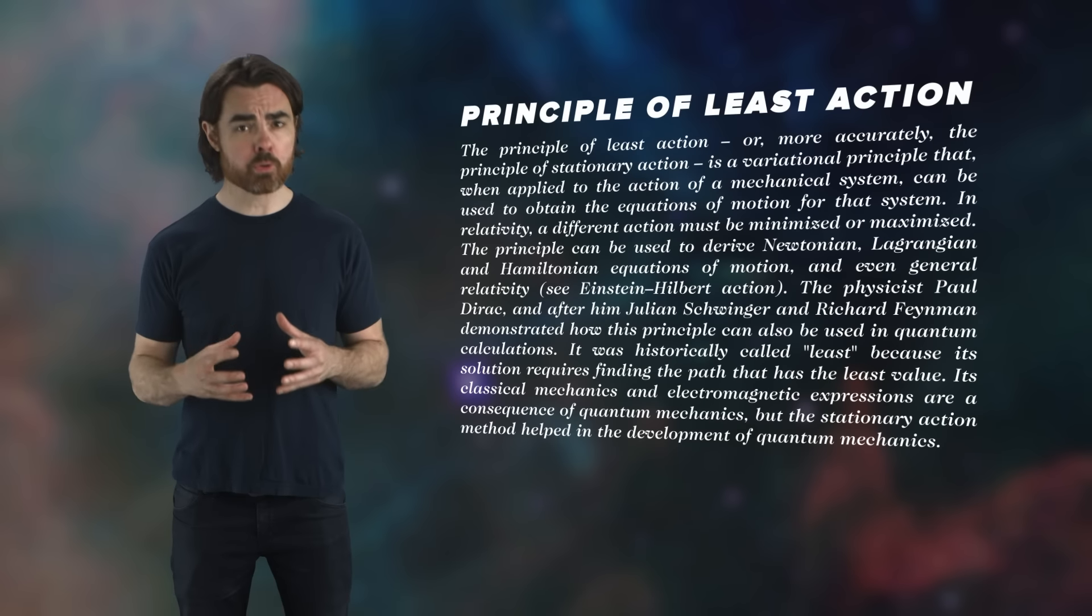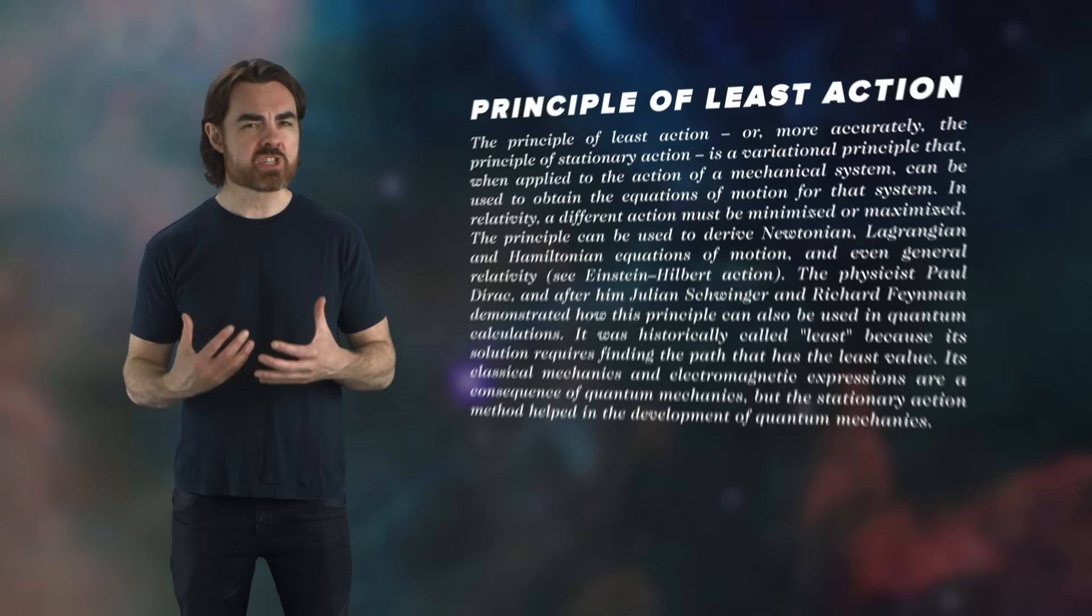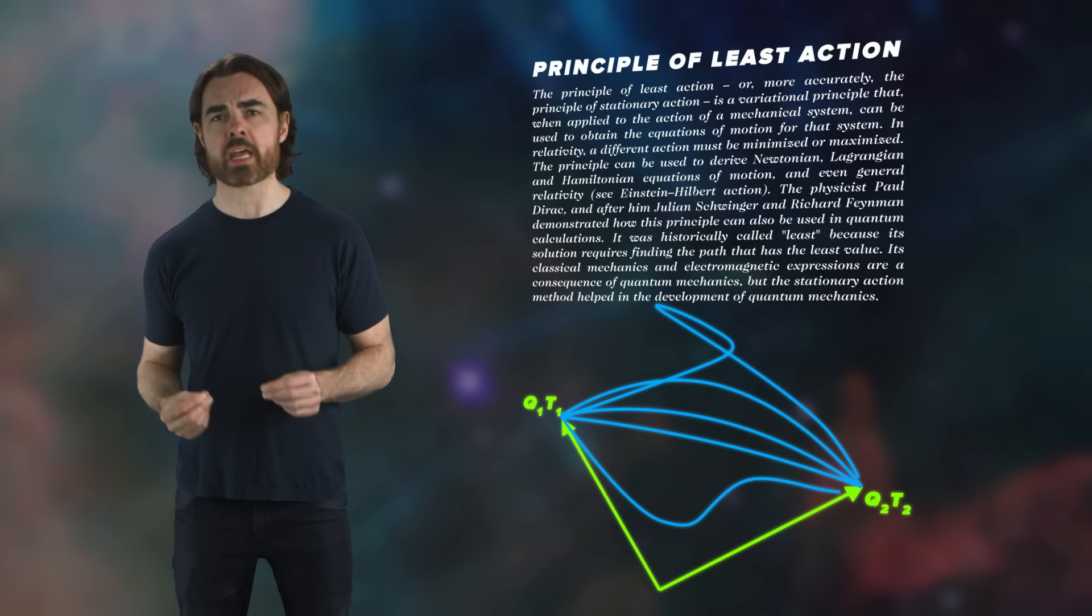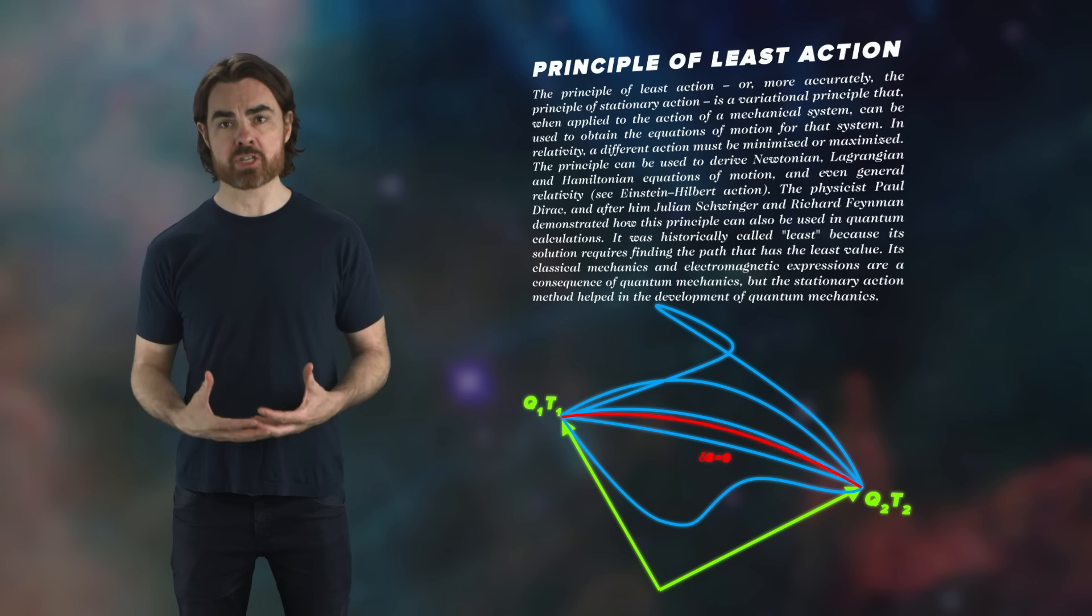Despite its profound implications, the math behind Noether's theorem is surprisingly straightforward. It falls like magic out of another deep law of the universe, the principle of least action, which states that the universe will always choose the path between two states that minimizes the change in the action.